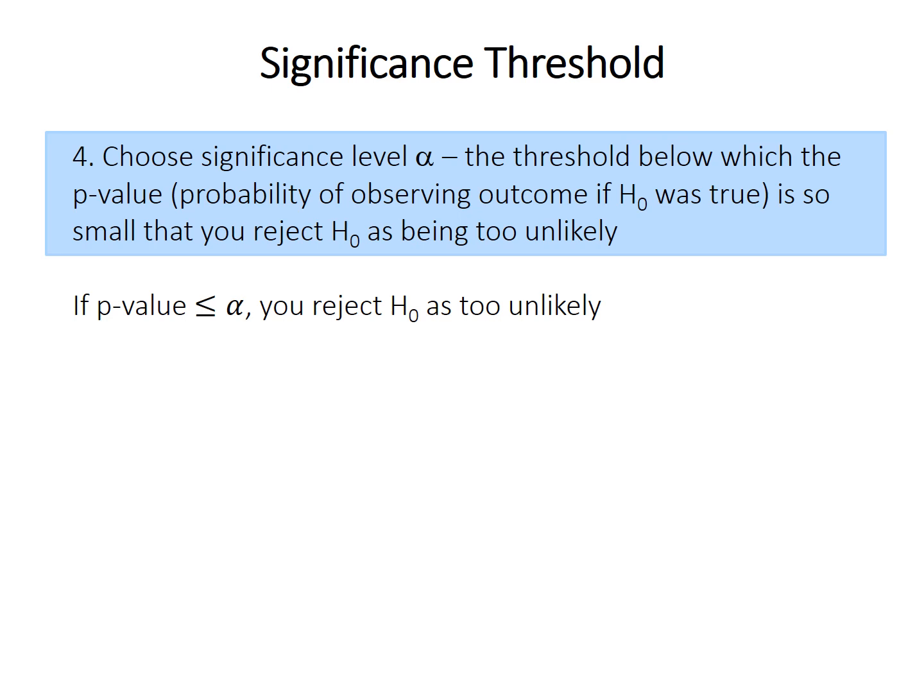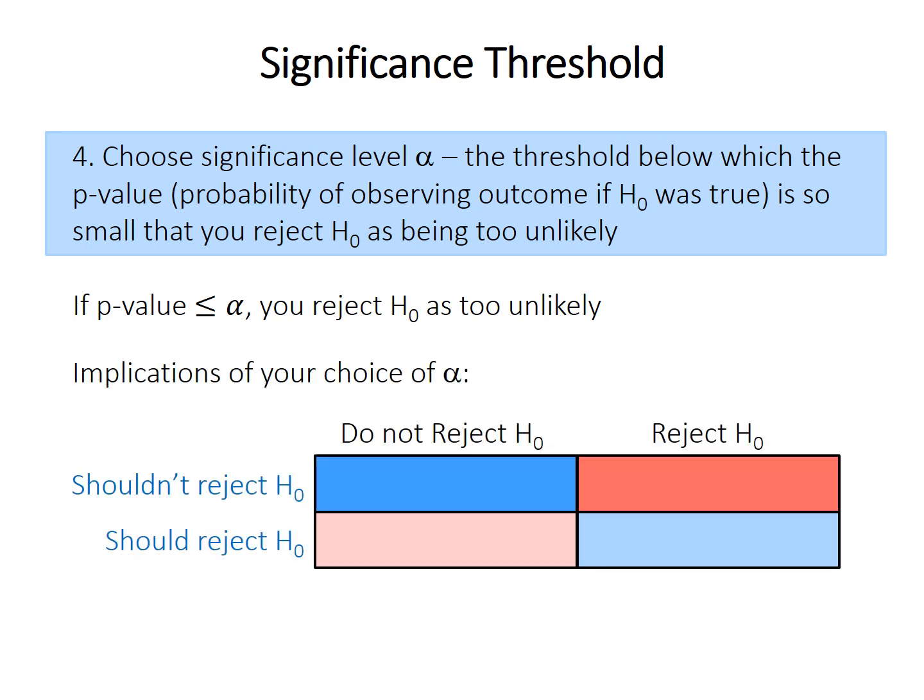But the p-value itself is just a probability. It doesn't itself help us make decisions on its own. We need to pair it with something called alpha, or the significance level. And so alpha is a threshold, which means that if the p-value is smaller than or equal to alpha, we would say that the null hypothesis is probably not very likely, so we can safely reject it. The question is, what should we choose for alpha, and what are the implications of that choice? Consider this matrix of these two columns and two rows. The rows on the left in blue indicate two possible states of reality. We can never know which of these is really true, but in reality we should either reject the null hypothesis or we shouldn't reject it. The columns, which are in black on the top, are the two possible decisions we can make. We can either reject it or we won't reject it. And so we reject it if the p-value is smaller than or equal to alpha.